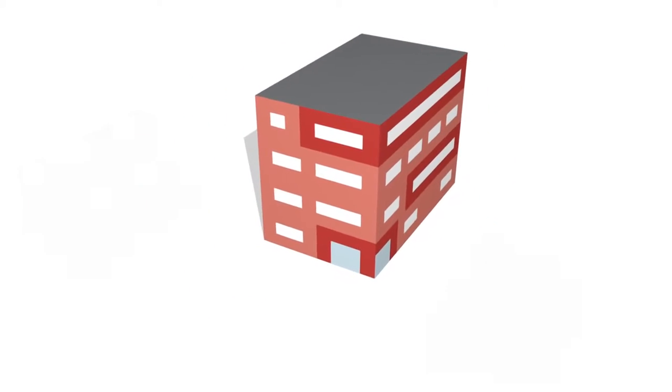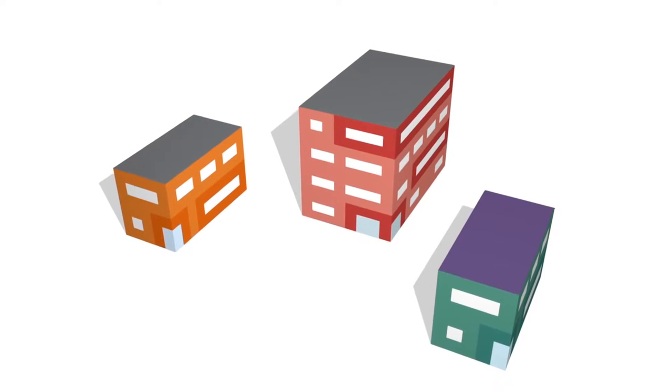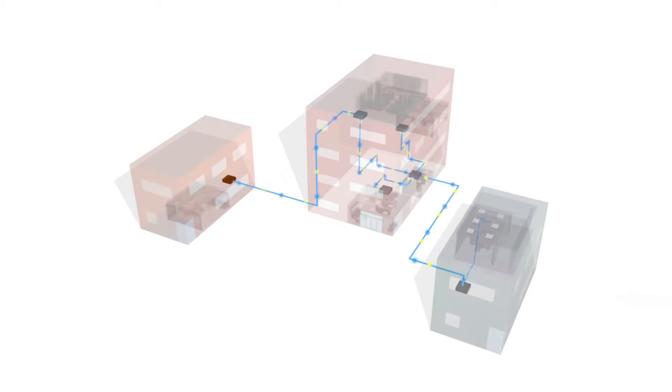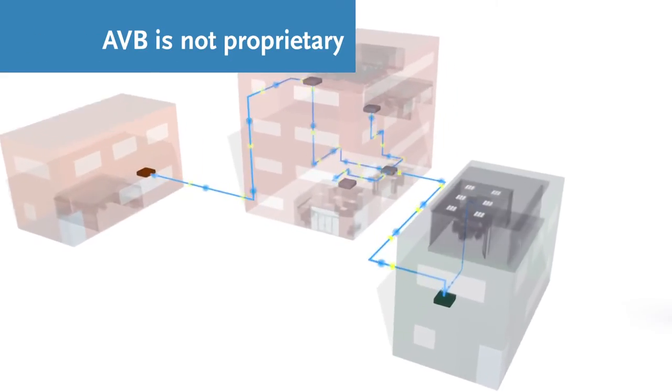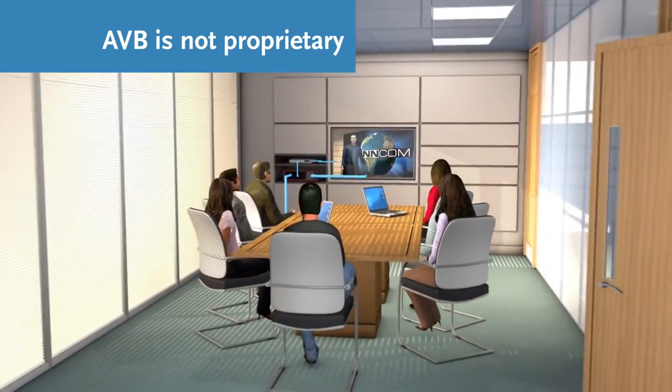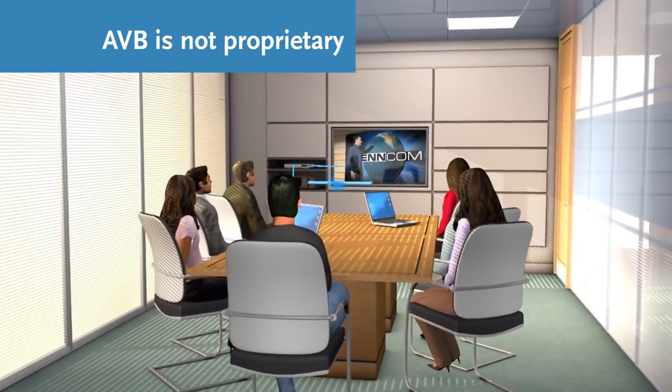AVB was developed to provide an answer for installations that require lower latency and higher channel counts. An AVB network implements a set of protocols ratified by an IEEE task group. And because it's not proprietary, AVB provides for greater interoperability between devices.